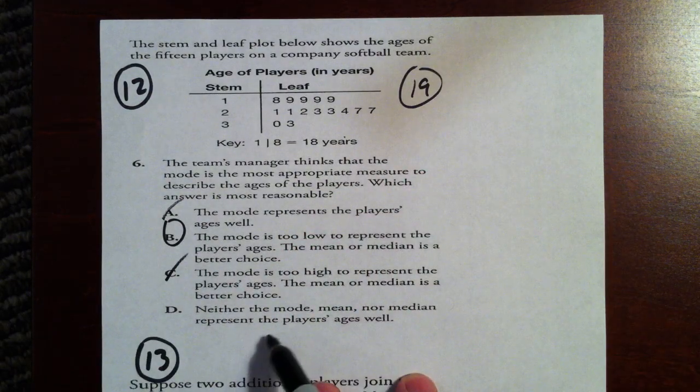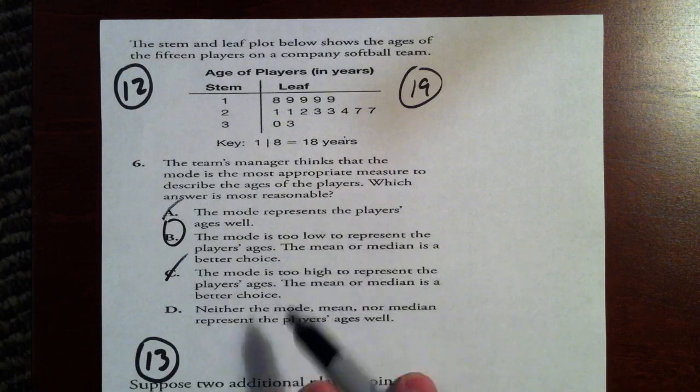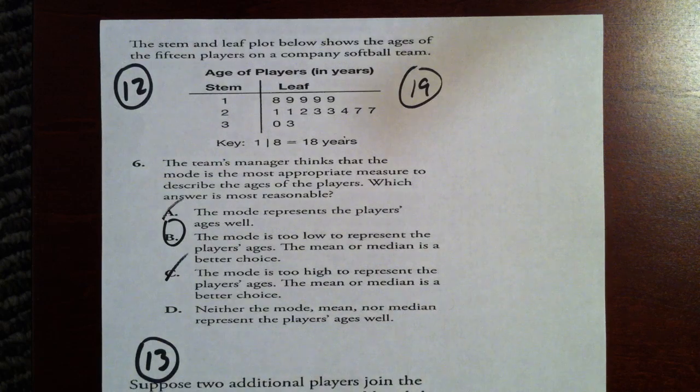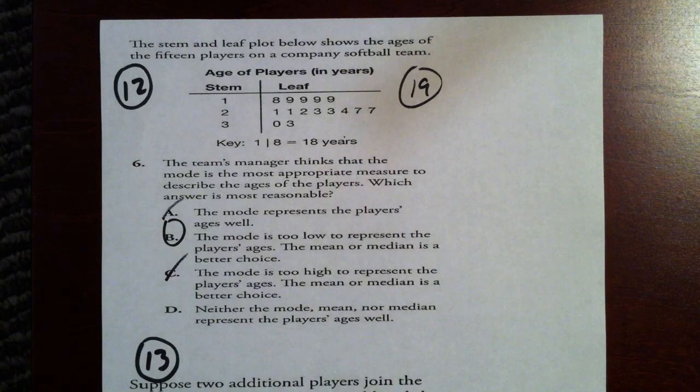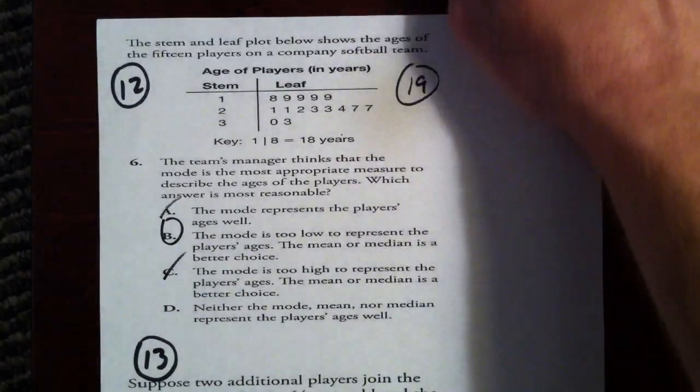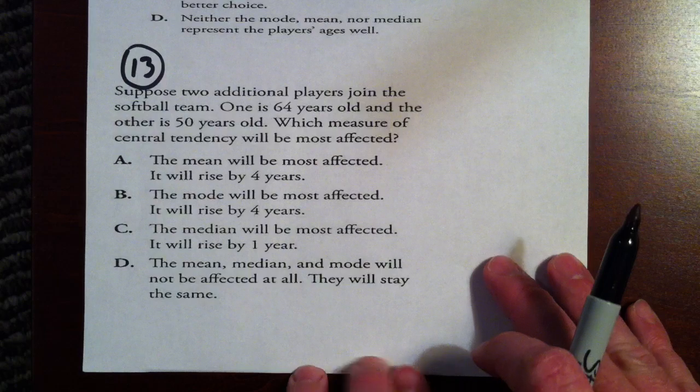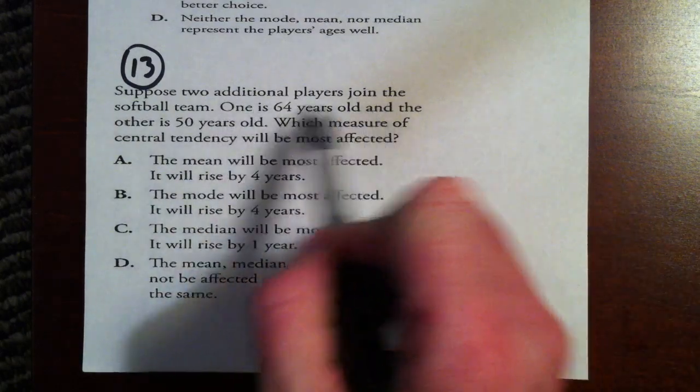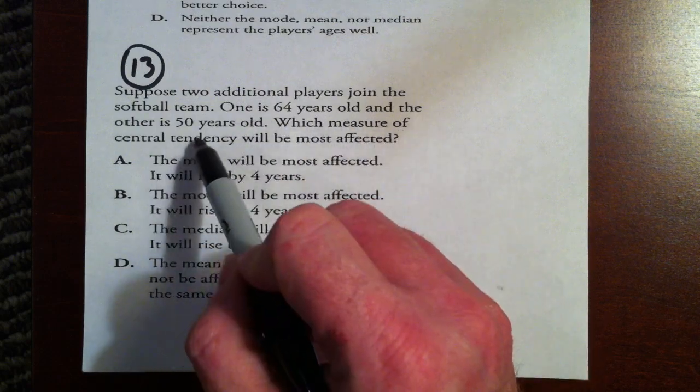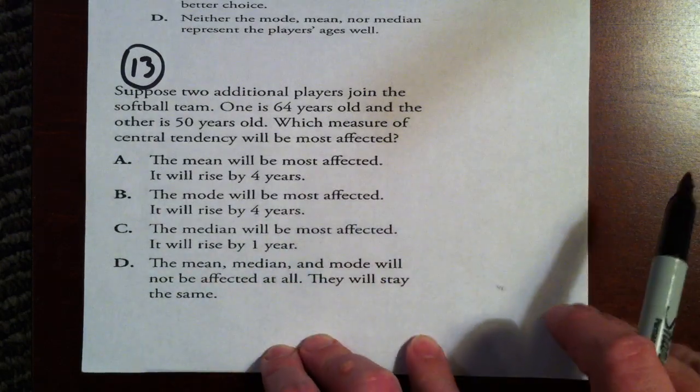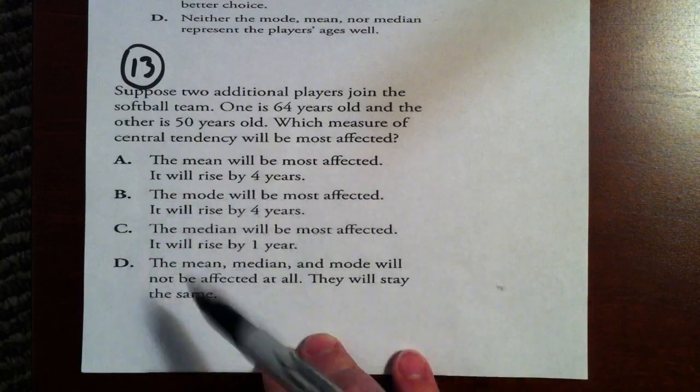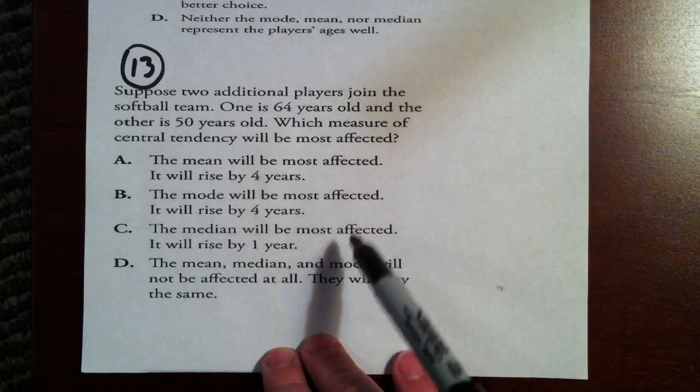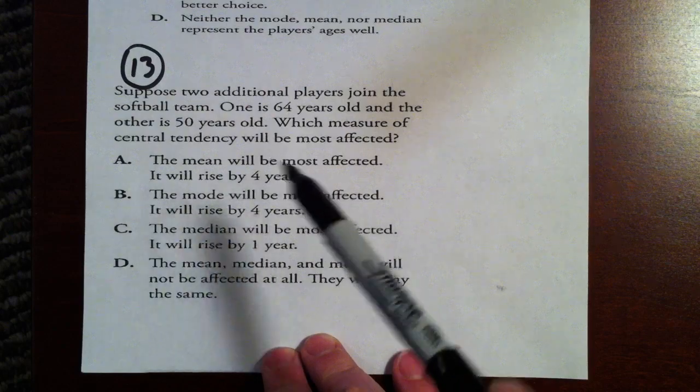Neither the mode, mean, or median represent the player's ages well. Well, at some point, one of those figures has to be the best measure of central tendency. They may not all be perfect. They may not all even be good. But usually there's one, or maybe even two, that's better than the other one, which leads us back to choice B. 13. Suppose two additional players join the softball team. One is 64, and the other one is 50. Which measure of central tendency will be the most effective? And we'll come back, because this is such an intricate problem, we're going to do this one in class together. So if you have questions about number 13, make sure you have those by the time we get back to class.